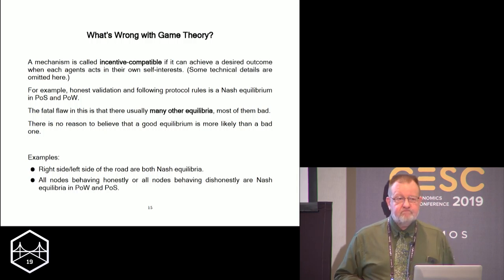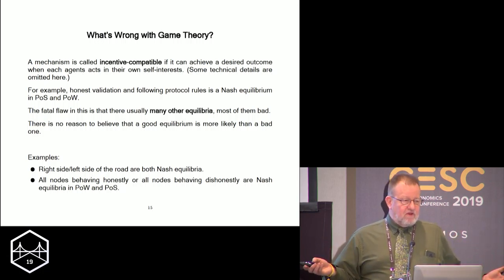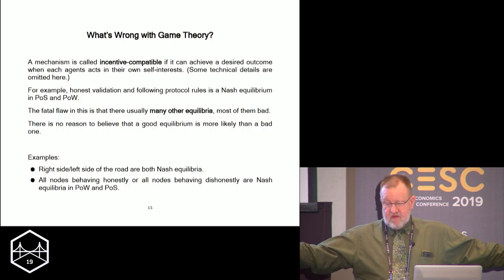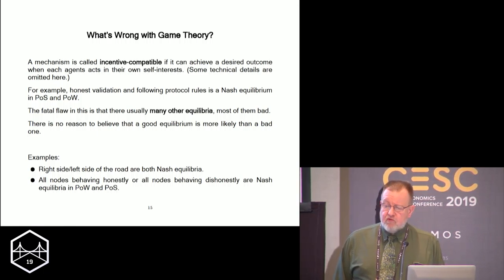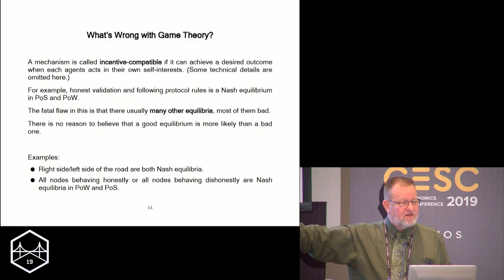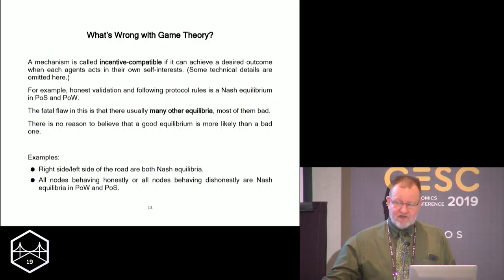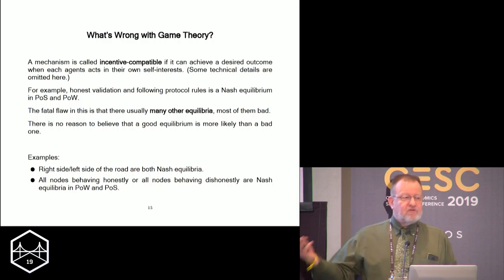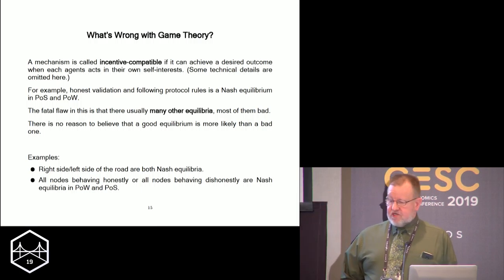An example: some countries drive on the right, some on the left — both are Nash equilibria. In fact, driving in the middle is also a Nash equilibrium, because if everybody else does it, what can I do to improve myself? In the case of blockchain, consider the halving: what if all nodes simply decided not to cut their rewards in half? Would I as a node reject all blocks that don't have my reward? I get a higher reward, and I never add a block because everybody else is sending me blocks with that property. So I cut my throat two ways if I refuse. That's another Nash equilibrium — and there are an infinity of them. Nash is just far too weak.